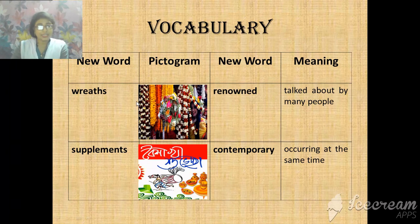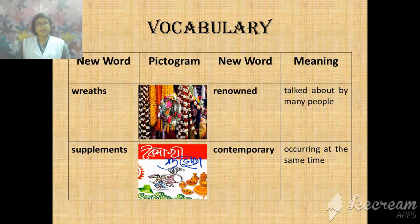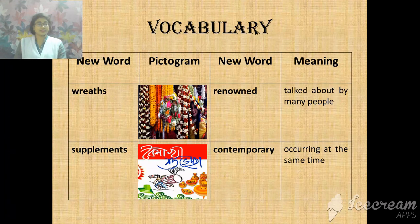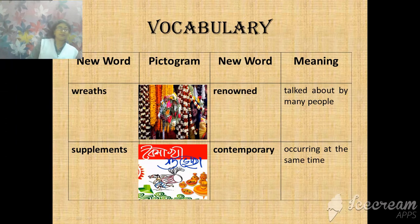We have some other words too. The pictogram here shows reeds — when flowers are joined together with other flowers by thread, it's called reeds. We use reeds for different programs. And the next one is supplement — supplements are books for a special occasion where writing related to those programs or functions is included. We also have the word renowned, which means talked about by many people. And contemporary means occurring at the same time.